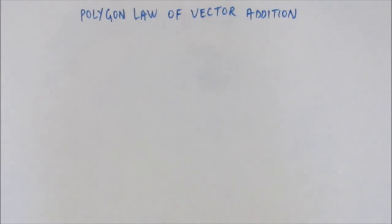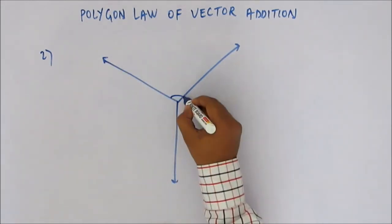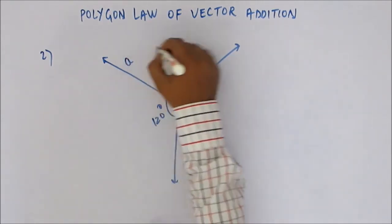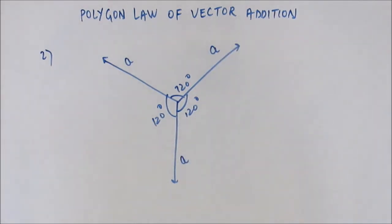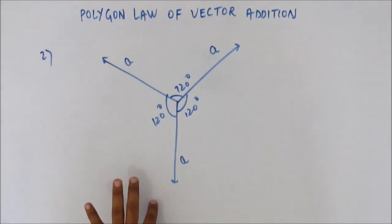The second problem: three vectors at an angle of 120 degrees with respect to each other, each of magnitude a. Find the resultant. We did this before and it came out as zero. Now think of it from the point of view of the polygon law of vector addition. Use the polygon law directly to show that the sum of these three vectors is zero.